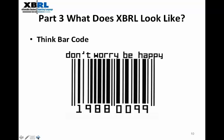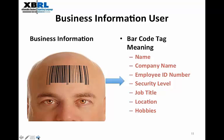So what does XBRL look like? Think barcode. If we have the phrase 'don't worry, be happy,' the barcode beneath it is the way to tag that phrase. That's the concept behind XBRL tagging. For example, a business information user's employee badge has a barcode containing tags for the person's name, company name, employee ID number, security level, job title, location, and hobbies.